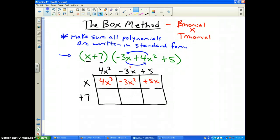Alright, now the bottom row. I take the +7 times the 4x², and I get 28x². I take the 7 times the -3x, which is -21x. And I take the 7 times the 5, and I get +35.